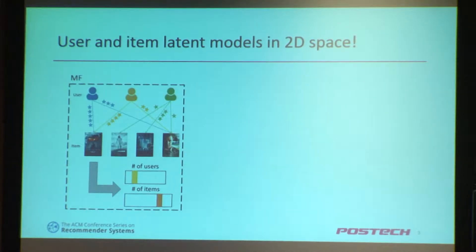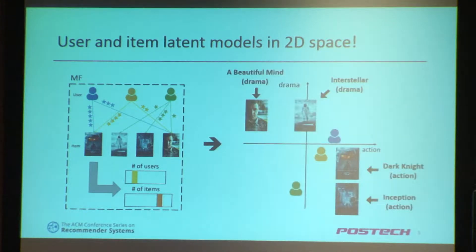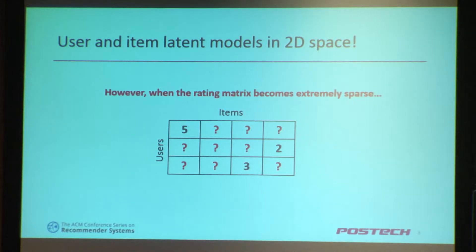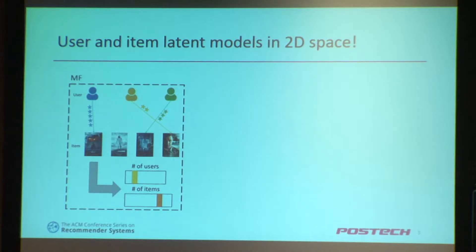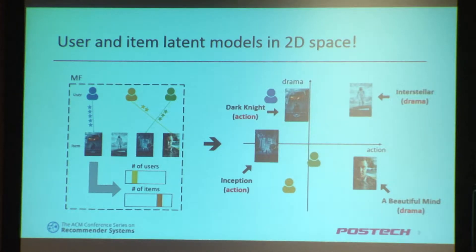Interestingly, according to previous work, these latent models can be plotted to two-dimensional space, and we expect that users and items are placed at proper positions. However, when the rating matrix becomes extremely sparse, user and item latent models will not be well-trained, resulting in inaccurate positions of users and items on the two-dimensional space and giving poor recommendations.